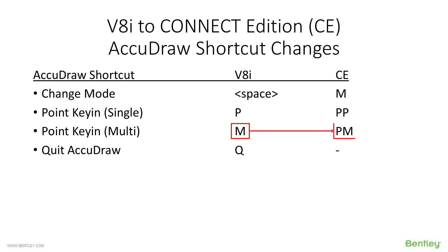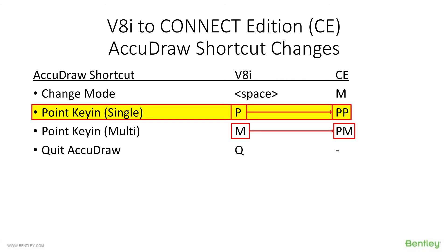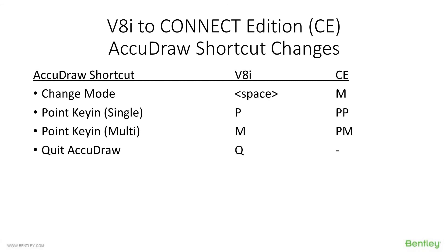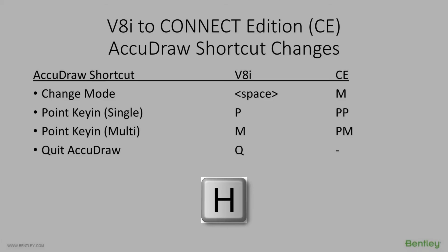Since M is now used for changing mode, the point key-in shortcuts had to change. P used to be point key-in single and M was point key-in multi. Now you use P followed by P for point key-in single, and P followed by M for point key-in multi. If you didn't use those, there's nothing new to learn. The final change: Q was for quitting out of AcuDraw — that's just gone, which is a relief since it was easy to hit accidentally.